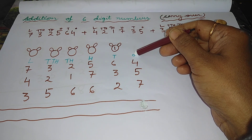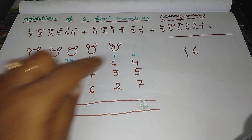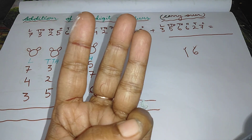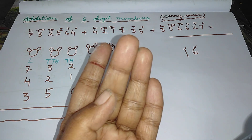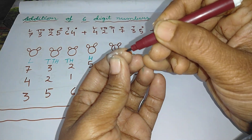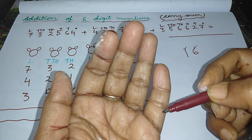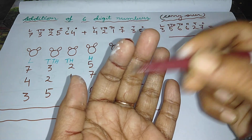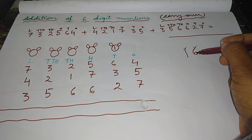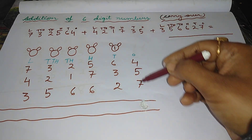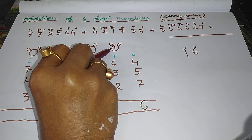In one's column, the first digit is four, the second digit is five, the third digit is seven. Add all these digits. Count four lines, then five more, then seven more — counting a total of sixteen lines. The first digit is one and the second digit is six. So write six in one's column and carry the one into the next column, that is the ten's column.